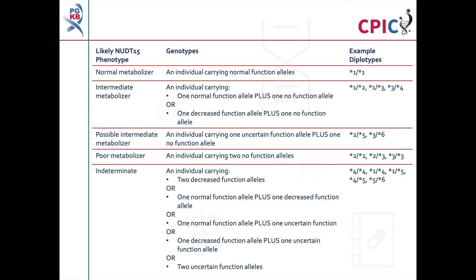Note that the functional status of some TPMT and NUDT15 haplotypes have not yet been characterised. These are listed as having an unknown effect on the function of TPMT or NUDT15 and should be interpreted with caution on a genetic test. An important caveat for all genotyping tests is that normal function status is given to all alleles which are not detected in the assay, which can include rare reduced function or non-functional alleles not routinely screened for in some genotyping tests.